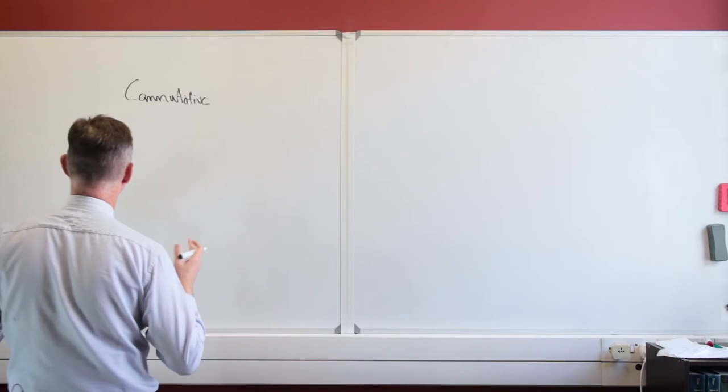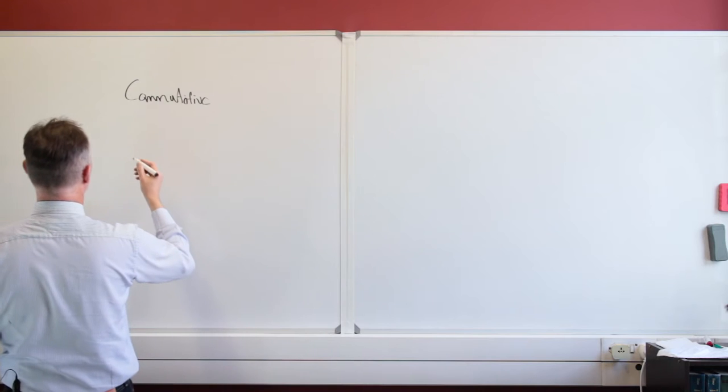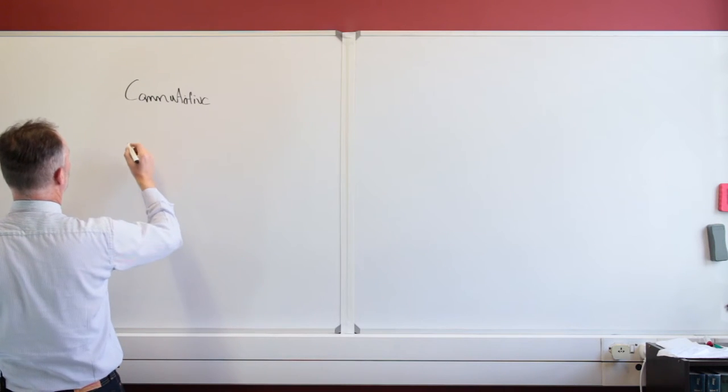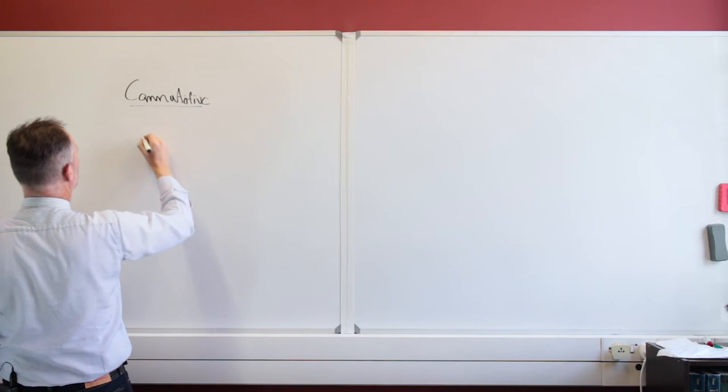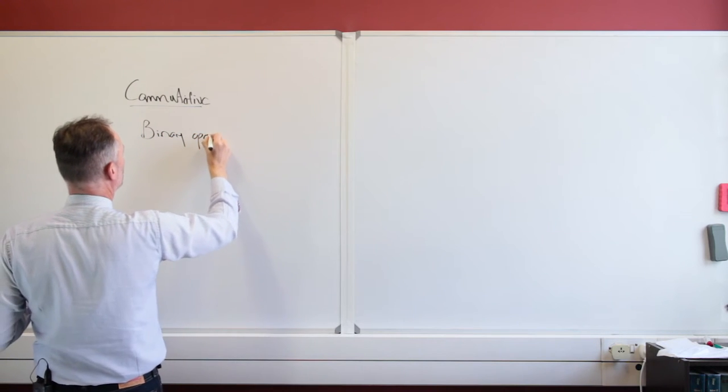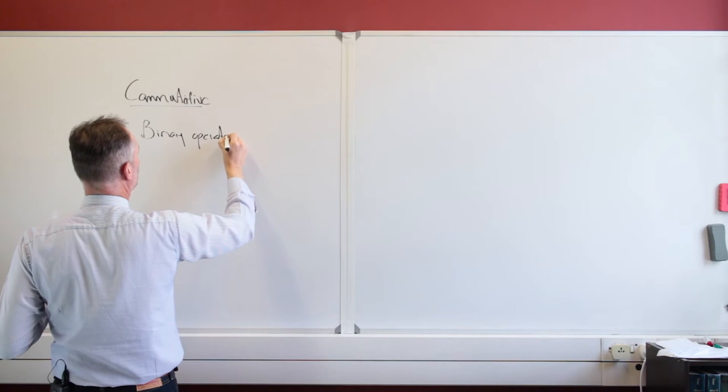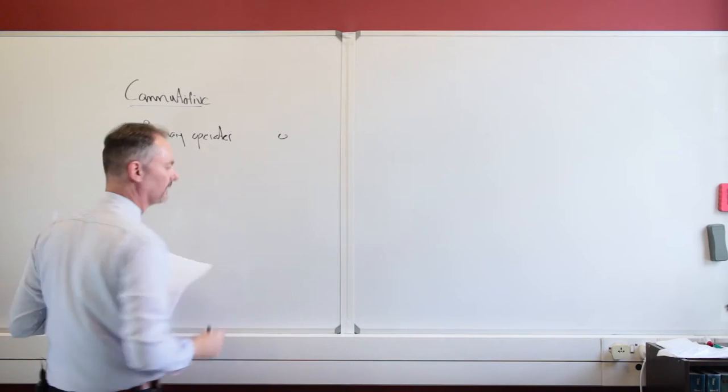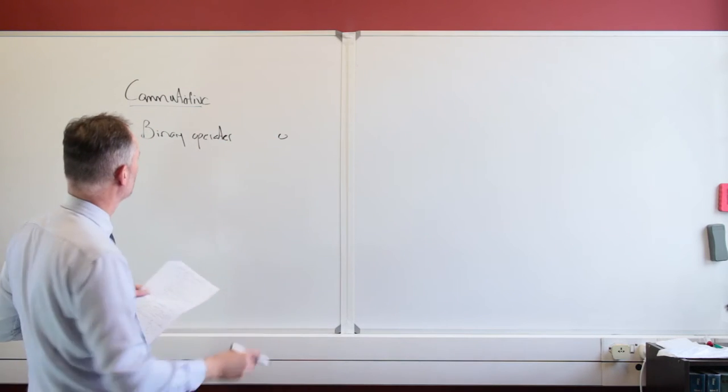And what we're going to define is on some set. Let's define this. First, let's have our binary operator. And let's make that just this generic symbol, just our little circle.